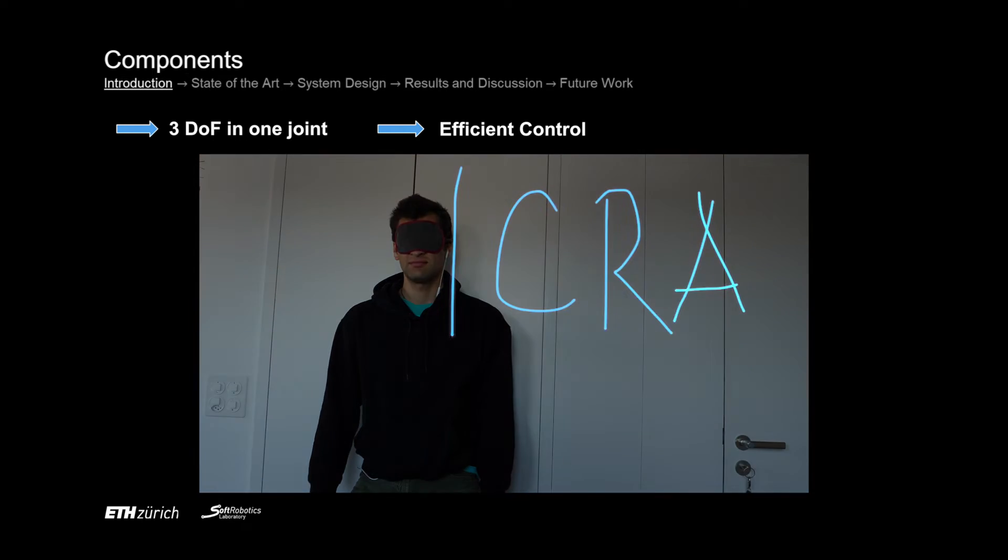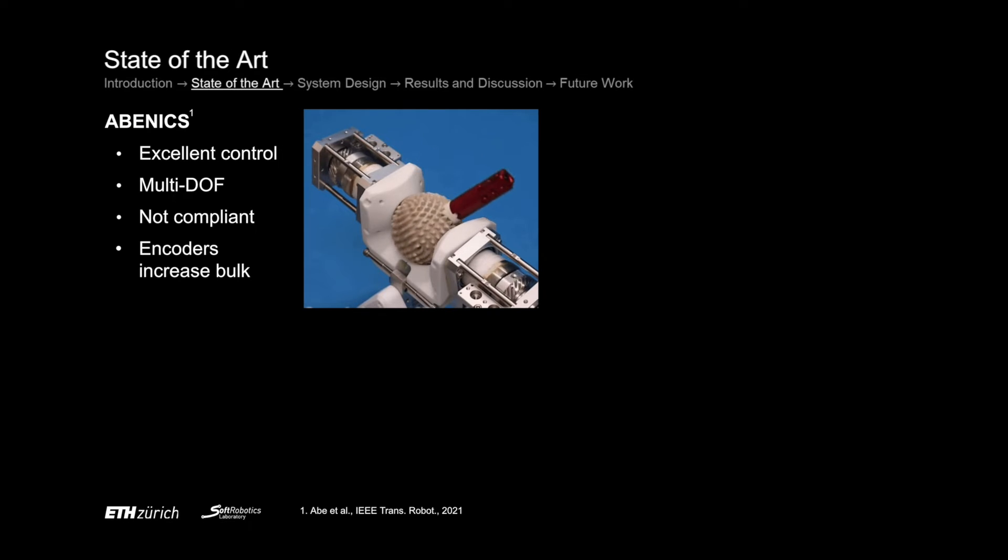So how does the state-of-the-art accommodate those two distinct features? Well, there have been efforts to integrate multiple degrees of freedom in one joint, like for example the Benix active ball joint mechanism which achieves great control performance and three degrees of freedom. However, it uses rigid motors that makes the link not compliant with low back drivability and it uses encoders for feedback which adds bulkiness.